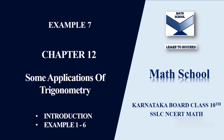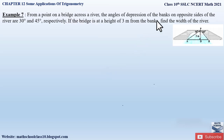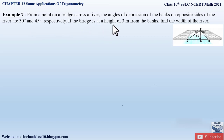Now let us begin with the video. Example 7 from Chapter 12, Some Applications of Trigonometry says: From a point on a bridge across a river, the angles of depression of the banks on opposite sides of the river are 30 degrees and 45 degrees respectively. If the bridge is at a height of 3 meters from the banks, find the width of the river.